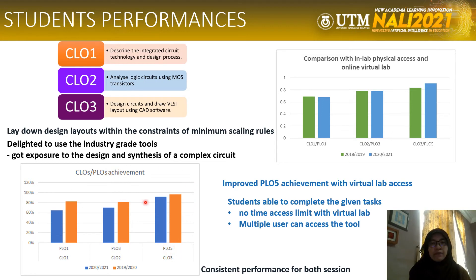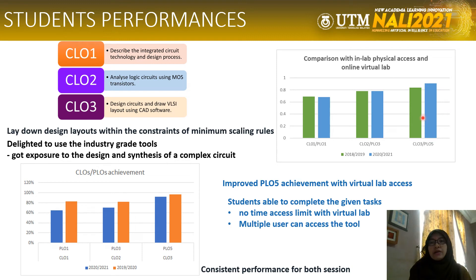This figure shows the comparison between two academic years where the project assignments were totally implemented using virtual access. We can see PLO5 achievement is nearly 100%. Meanwhile, the figure here shows the comparison between lab physical access and online virtual lab. During physical access, the student is limited to accessing the lab for 5 days per week from 8am to 5pm, and therefore they are not able to complete most of the tasks. However, during the pandemic years, the implementation of virtual lab access produced promising output where performance is nearly 100%.